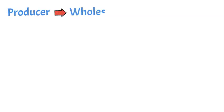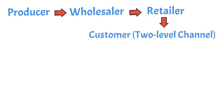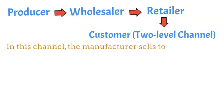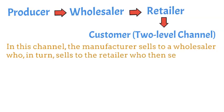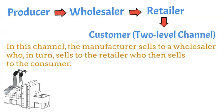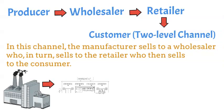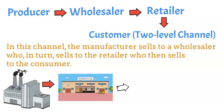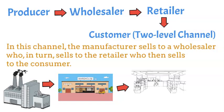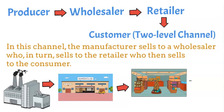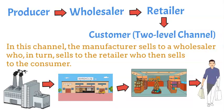Two-level channel: Producer to Wholesaler to Retailer to Customer. In this channel, the manufacturer sells to a wholesaler who, in turn, sells to the retailer who then sells to the consumer. The wholesaler takes away extra costs, such as service costs or sales force costs, that customers usually pay when buying from retail, making the price much cheaper for the consumer. However, the wholesaler does not always sell directly to the consumer — sometimes the wholesaler will go through a retailer before the product gets into the hands of the consumer.